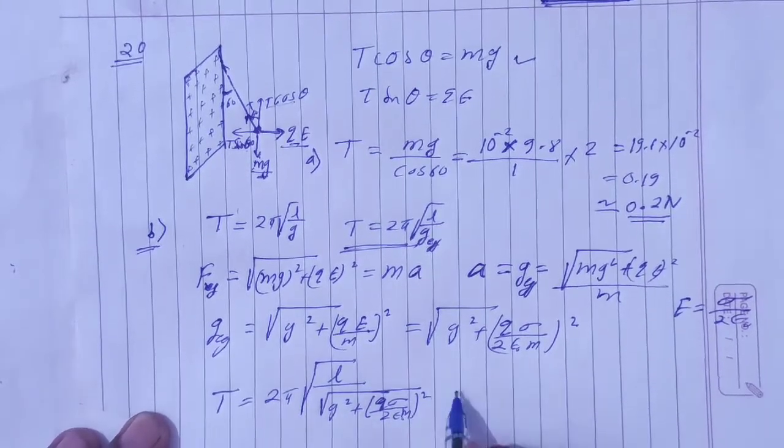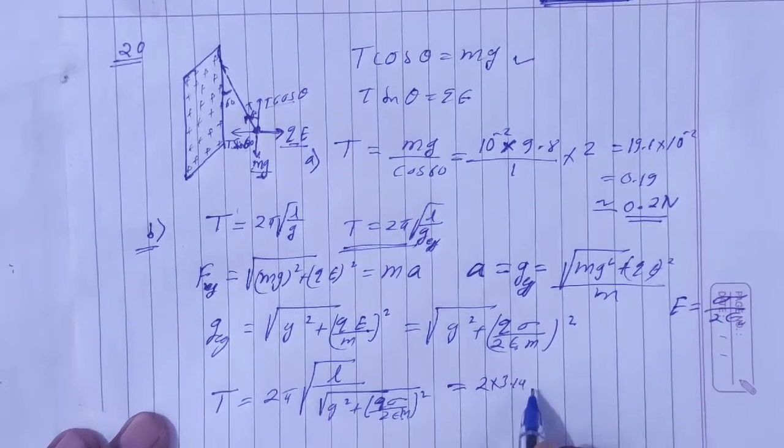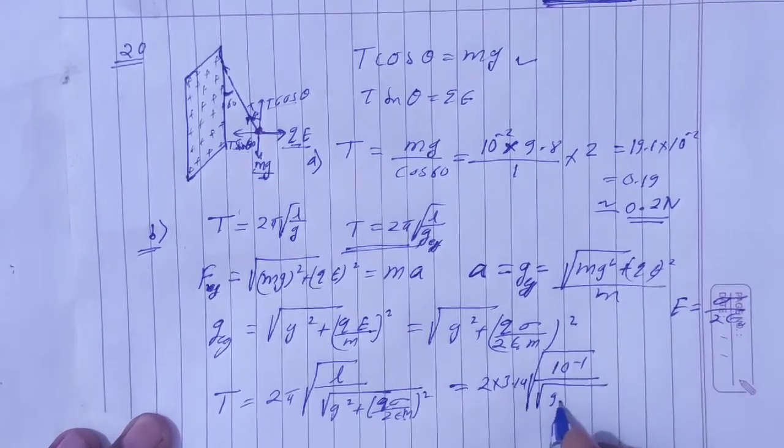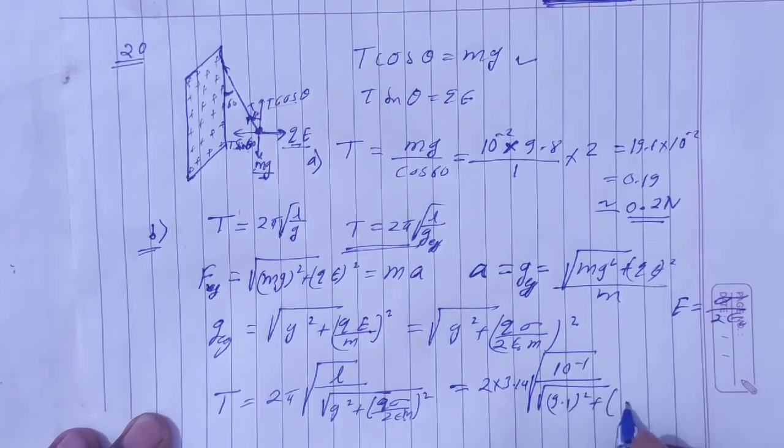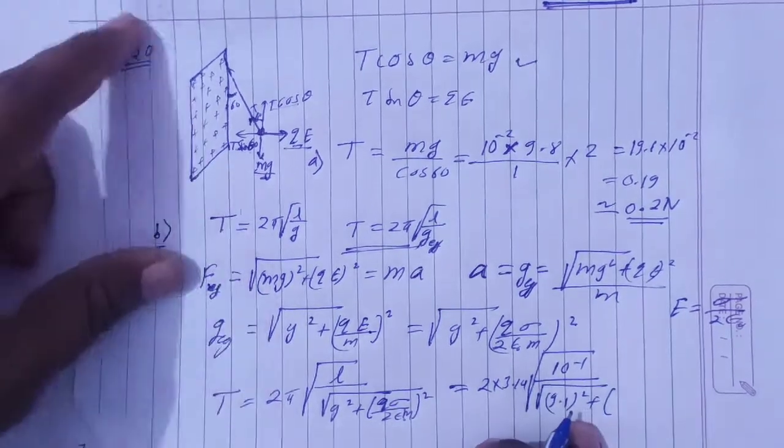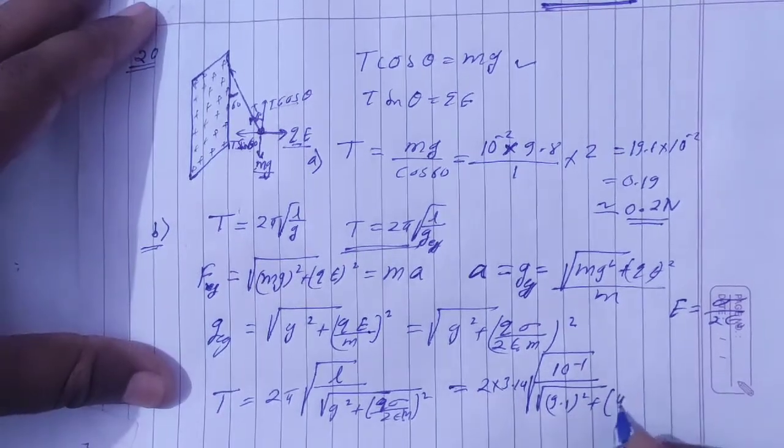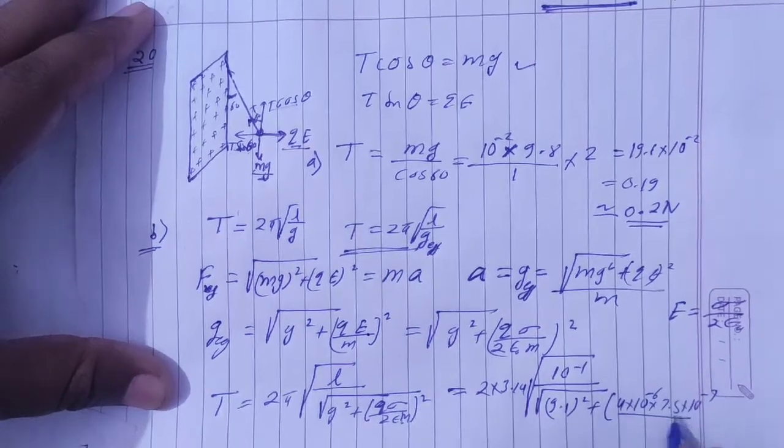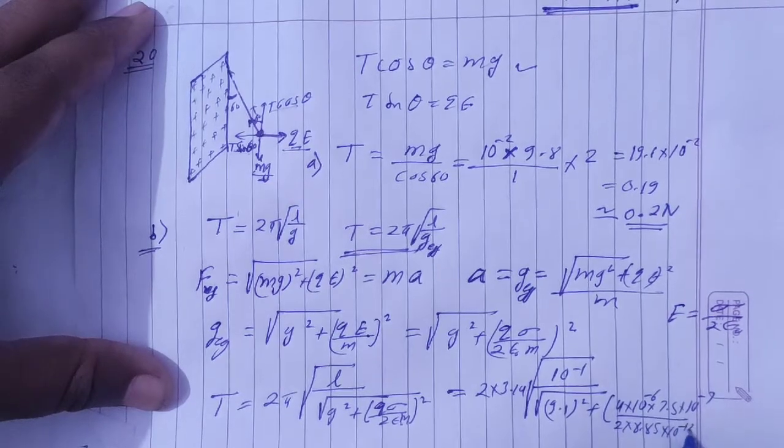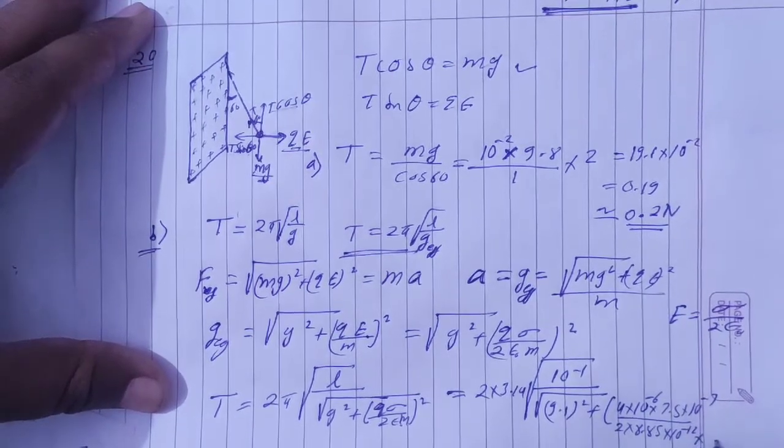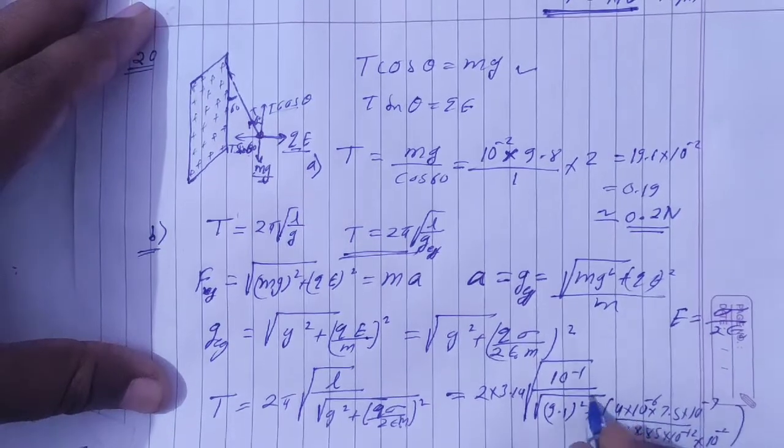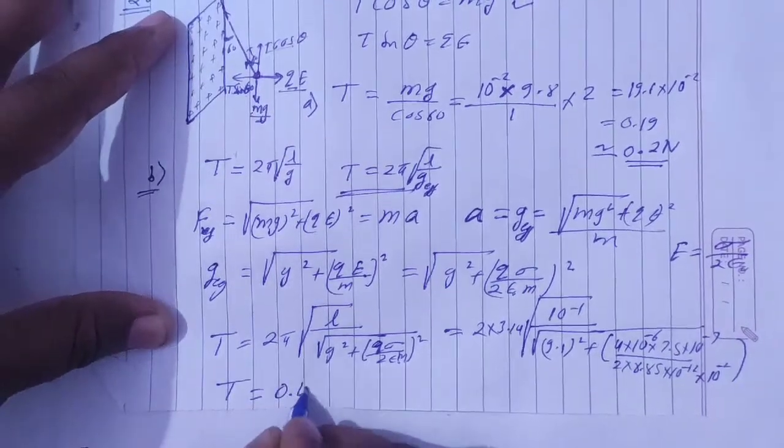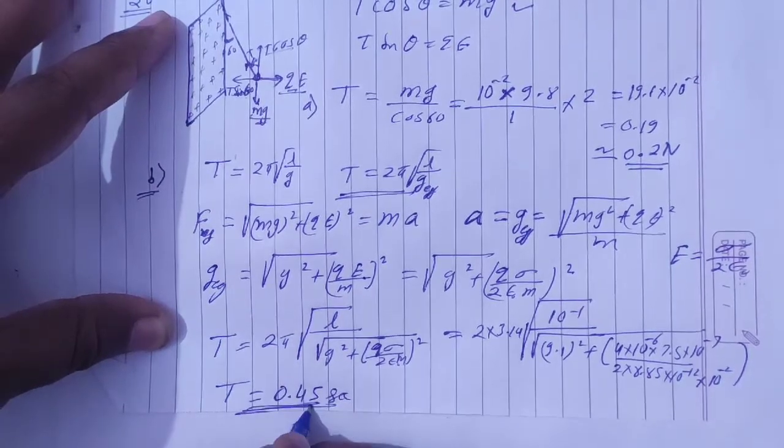Now we put values: 2 into 3.14. L is 10 cm that is 10 to power minus 1. G is 9.8 whole square. Charge given is 4 into 10 to power minus 6, sigma is 7.5 into 10 to power minus 7, 2 epsilon not is 8.85 into 10 to power minus 12, and mass is 10 gram that is 10 to power minus 2. Solving this, T will be 0.45 second time period.